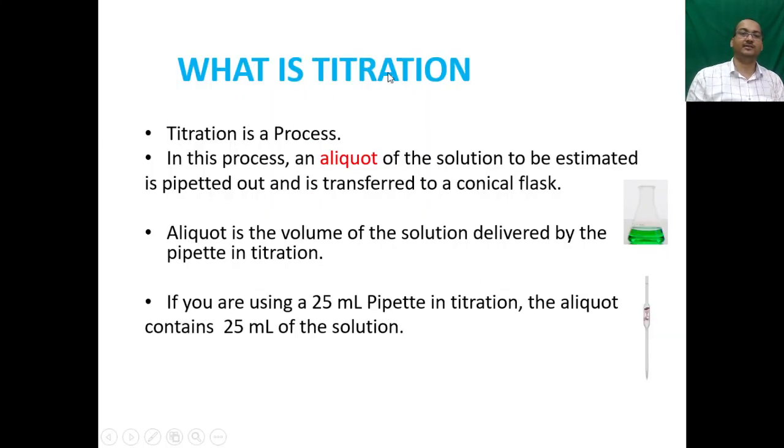Now question arises, what is titration? Titration is simply a process. In this process, an aliquot of the solution to be estimated is pipetted out and transferred to the conical flask. Here you can see the picture of conical flask and this one is the pipette. So what is aliquot? Aliquot is the volume of the solution delivered by the pipette in titration. If you are using a 25 mL pipette in titration, the aliquot contains 25 mL of the solution.